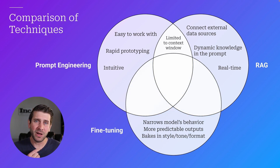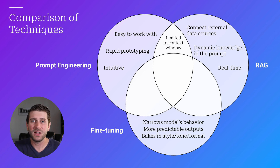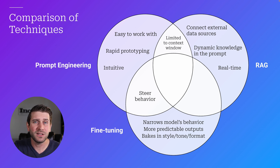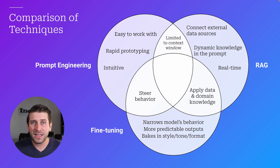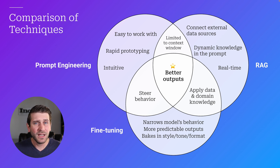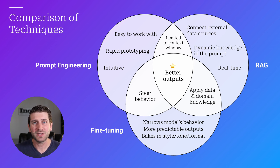Fine-tuning allows you to narrow the model's behavior, get more predictable outputs, and bake in style, tone, and formatting. Just like prompt engineering, fine-tuning steers the behavior of the model. And just like RAG, fine-tuning allows you to apply data and domain knowledge so your model becomes more capable. The thing they all have in common is that they all allow you to get better outputs, and they can all work together as tools and techniques in your toolkit for working with large language models.